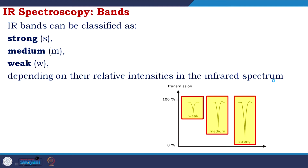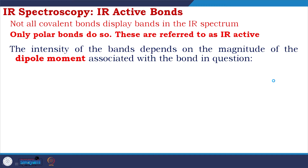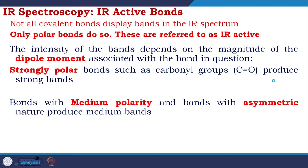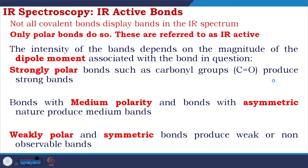Not all covalent bonds display bands in the IR spectrum — only polar bonds do, and these are referred to as IR active. The intensity of bands depends on the magnitude of the dipole moment associated with the bond. Strongly polar bonds such as carbonyl groups produce strong bands; bonds with medium polarity or asymmetric nature produce medium bands; weakly polar and symmetric bonds produce weak or non-observable bands.